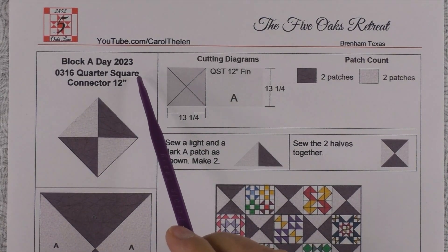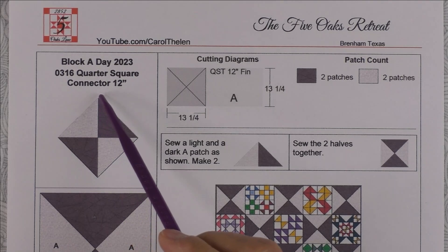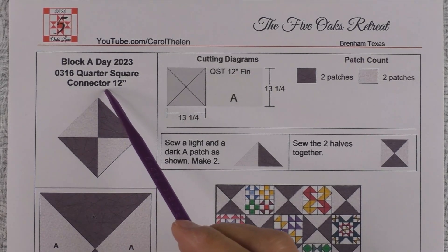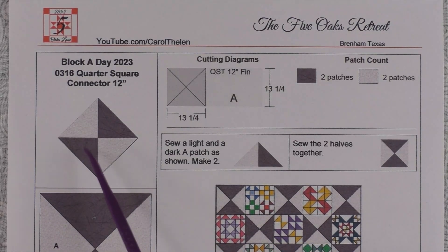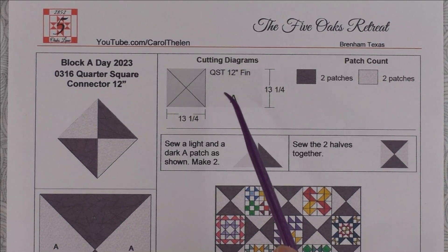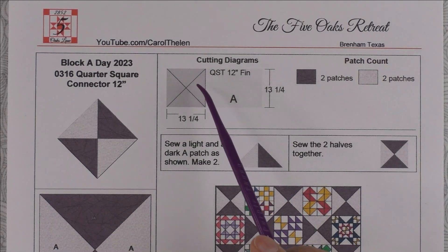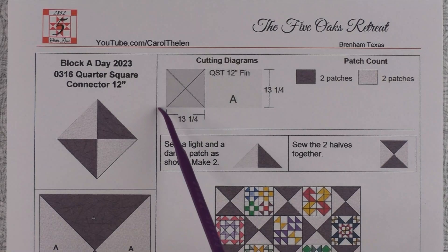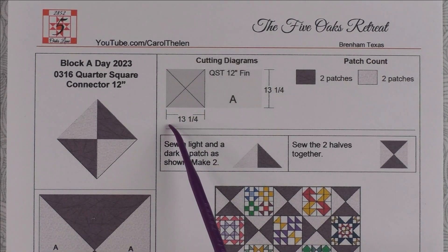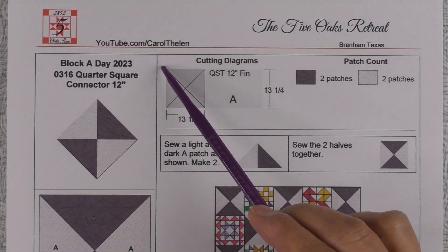This is the Quarter Square Connector block. It's just a giant quarter square triangle. There's one way to do it: we can do the rotary cutting method where we cut a thirteen and a quarter inch square and cut it in half diagonally twice.